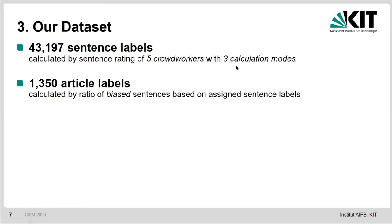We had different calculation modes to aggregate the crowd worker labels for each sentence. For example, we used the average vote of the crowd workers, then the majority vote, and as a third calculation mode, we said that if a sentence is annotated at least once as being biased, then this article is biased. If we aggregate the sentence labels on an article level, then we had about 1,300 article labels, which allowed us to correlate the annotations given by the crowd workers with the annotations already given by the experts.